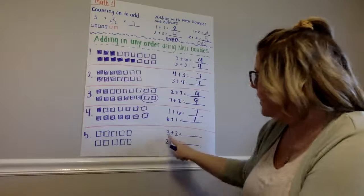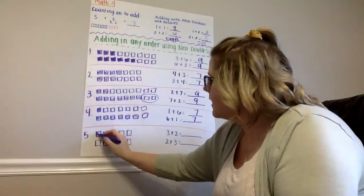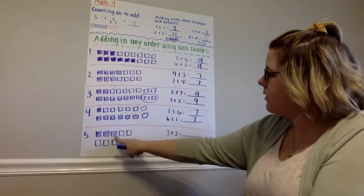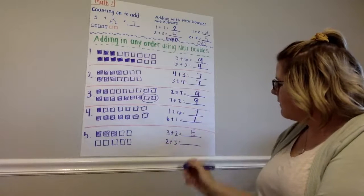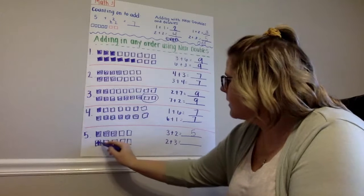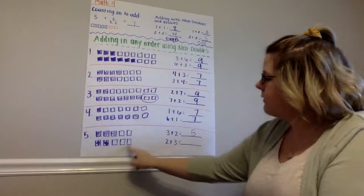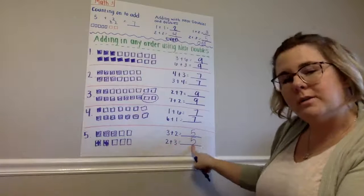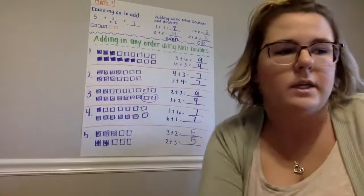Okay? The last one. We have 3 plus 2. So, I'm going to color in 3 cubes. And we have 2 left. So, 3, 4, 5. 3 plus 2 equals 5. Last one. I'm going to color in 2. And I have 3 right here. So, 2, 3, 4, 5. 3 plus 2 equals 5. And 2 plus 3 equals 5. We are adding in any order using near doubles.